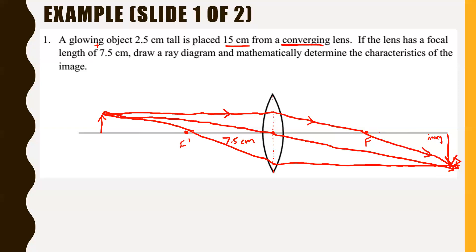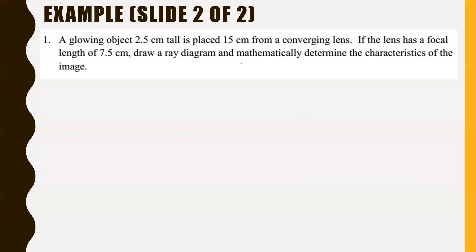Just judging by the picture drawn, the image is going to be inverted. It's also going to be real — with lenses, solid lines still dictate a real image, even though it's on the opposite side of the lens. As for its size, it almost looks like it'd be larger, but the drawing wasn't done with a ruler, so let's confirm with the math.